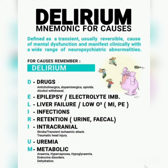M is for metabolic — this includes anemia, hypercapnia, glycemia, endocrine disorders, and dehydration. So this is all about delirium. The definition is that it is a transient, easily reversible cause of mental dysfunction and manifests clinically with a wide range of neuropsychiatric abnormalities.